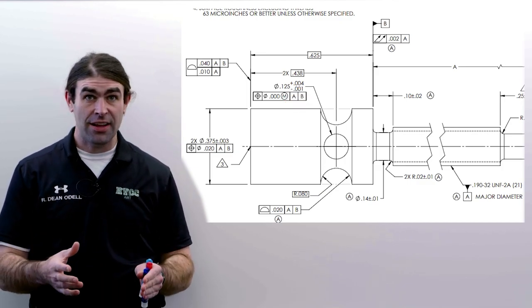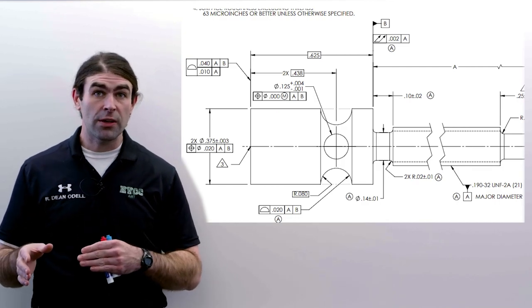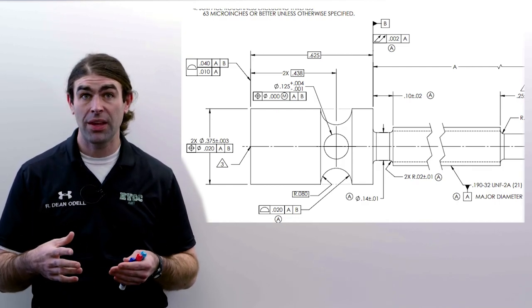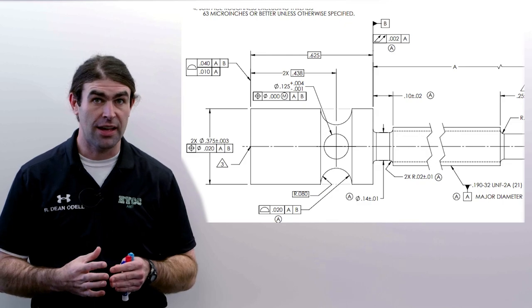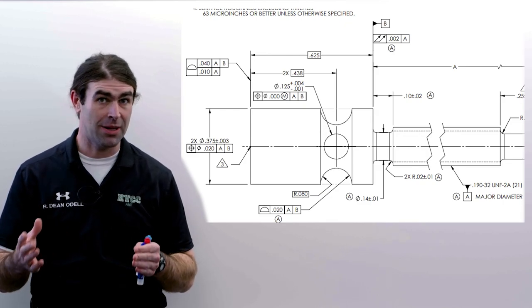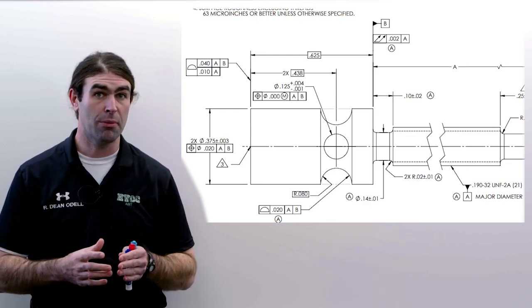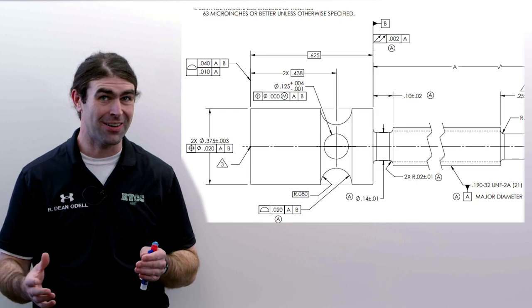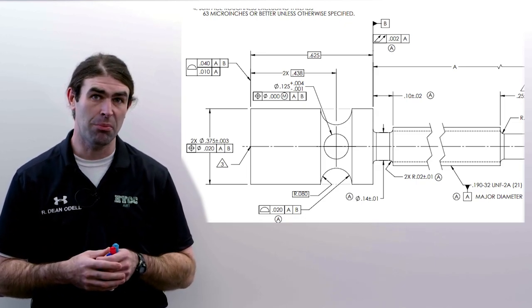In this case composite and two single segment mean the exact same thing. They won't always mean the exact same thing — I have to make that clear. If this applied to a pattern it would mean something very different, but in this case they're the same.